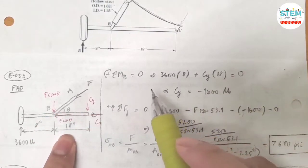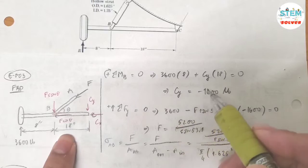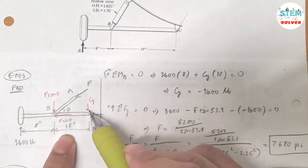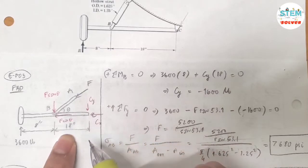Because this is downward, so clockwise direction, I have positive Cy times 18. The distance between B and C is 18 inches. Calculate this, I got Cy equals negative 16 pounds. This means that my assumption is incorrect, so it should have been pointing upward instead of pointing down.